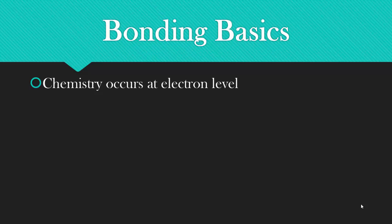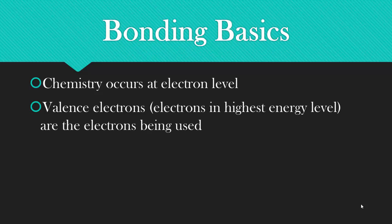We're going to start by reviewing bonding basics, and that chemistry occurs at the electron level. We're concerned about the valence electrons, the electrons at the highest energy level, because those are the ones that are used in bonding. Don't forget the octet rule, which is really that when bonding, atoms will achieve a noble gas configuration.